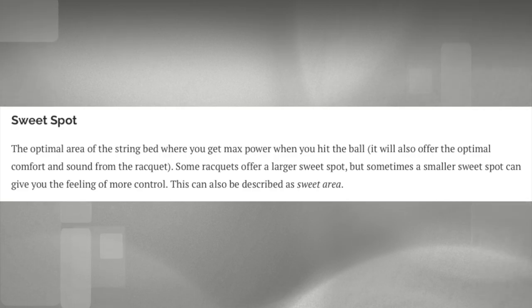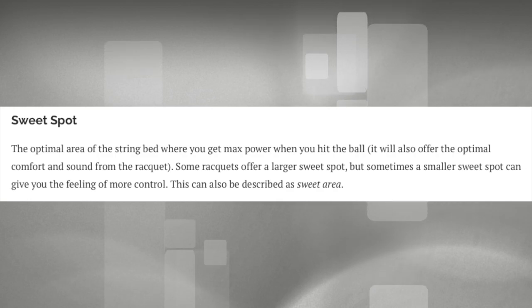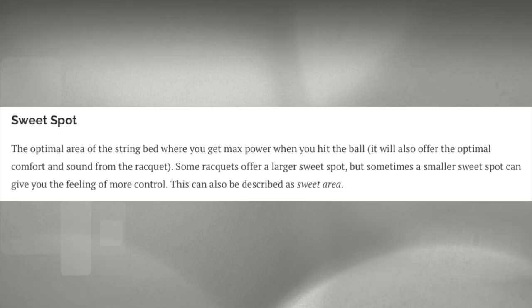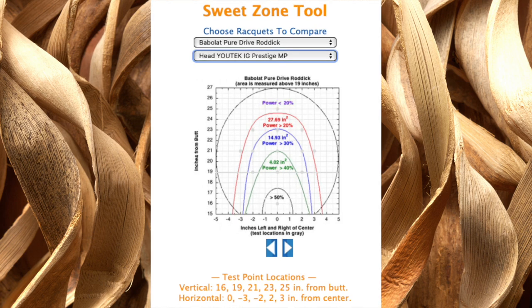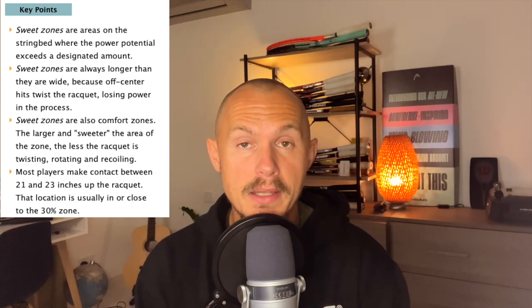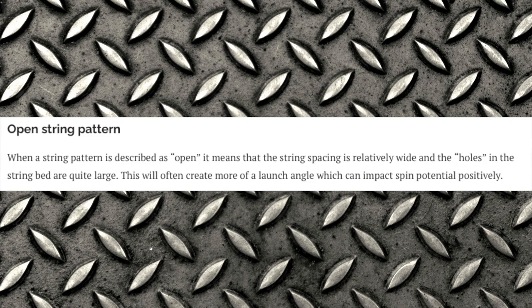Sweet spot — the optimal area where you should hit the ball for the best feel, power, and shot quality. Some sweet spots are marketed as massive. Tennis Warehouse University has heat maps showing sweet spot size. A large sweet spot doesn't always give the control you want, and a smaller sweet spot can give more confidence depending on your style. Generally, a bigger head size gives you a bigger sweet spot.